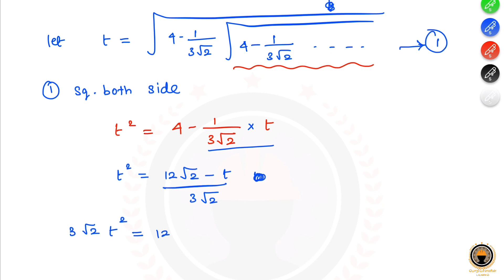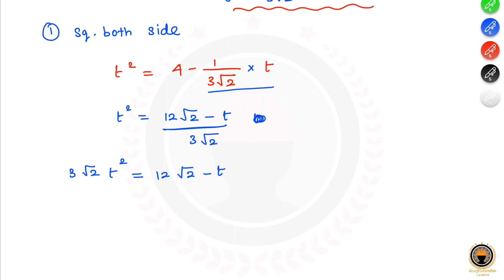The value of t gives us a multiplication factor of 4 times, so 12 root 2 minus t. Next step: 3 root 2 t squared plus t minus 12 root 2 is equal to 0. This is the quadratic equation.